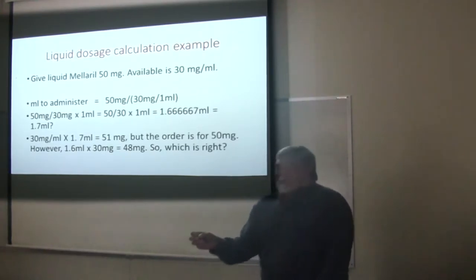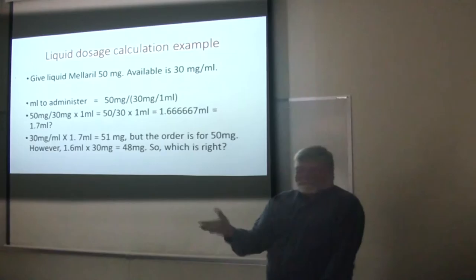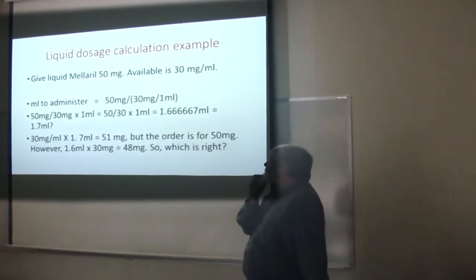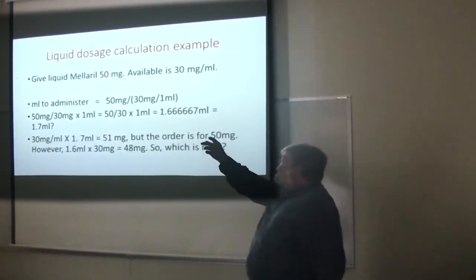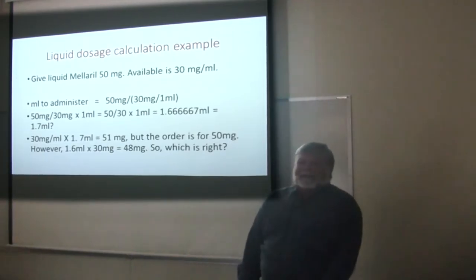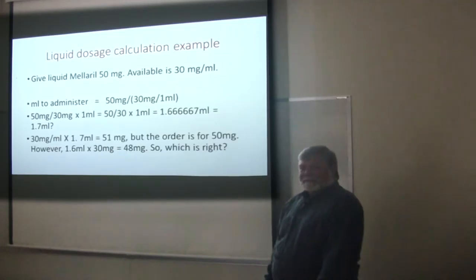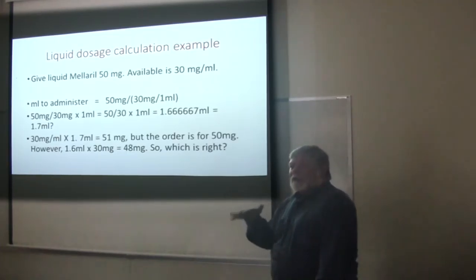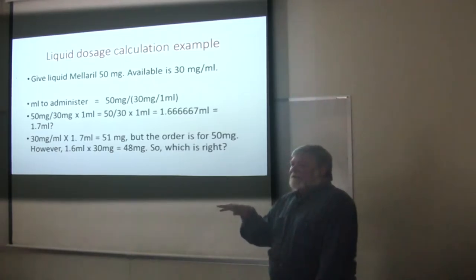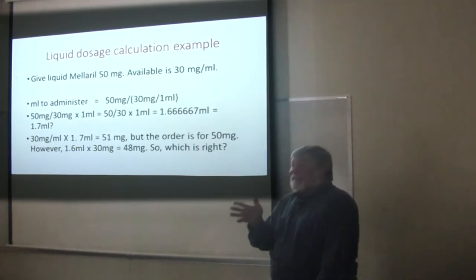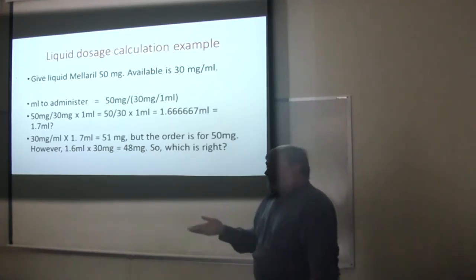You have the little containers, sort of like dairy creamers, except now filled with Mellaril instead of creamer. They have 30 milligrams per mL in those, probably about 5 mLs. You've got to figure out how you're going to give 50 milligrams. You really want to be cautious when people get caught up in milligrams and milliliters — you always need to be thinking in milligrams, even though you're going to administer a certain number of milliliters.